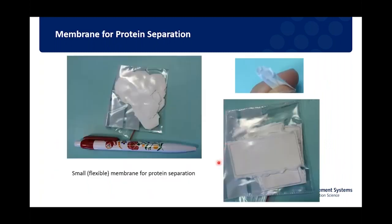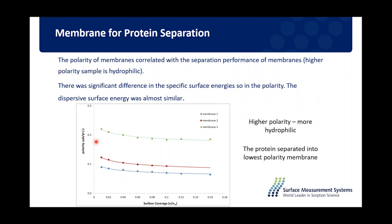Another example looks at a small flexible membrane for protein separation. Examining the dispersive and acid-base contribution — the polarity, which is acid-base divided by total — for three different membranes, we can see a very significant increase in surface polarity as we change the surface chemistry. The protein was separated into the lowest polarity membrane. So the higher the polarity, the more hydrophilic; the lower the polarity, the more hydrophobic the sample.